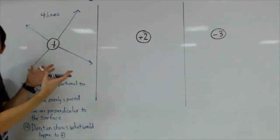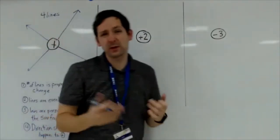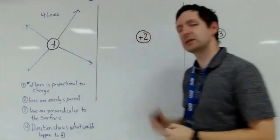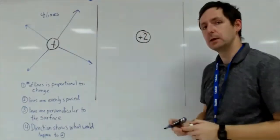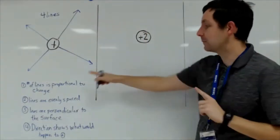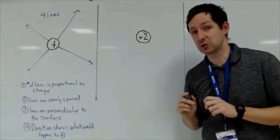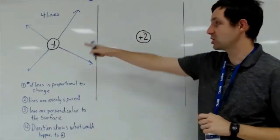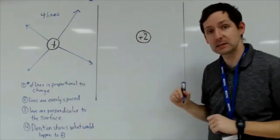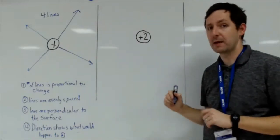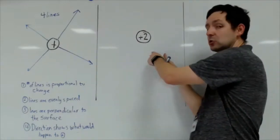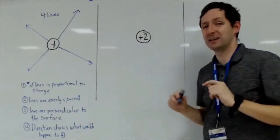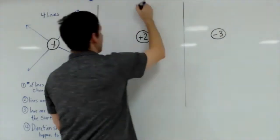Now let's look at a plus two charge. Remember, the number of lines needs to be proportional to the charge. A charge of plus one had four lines, so a charge of plus two should have eight lines.